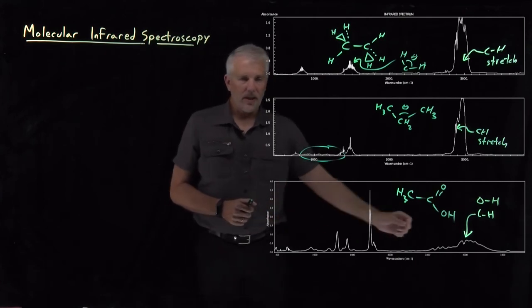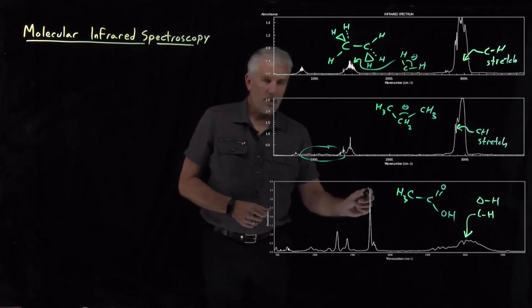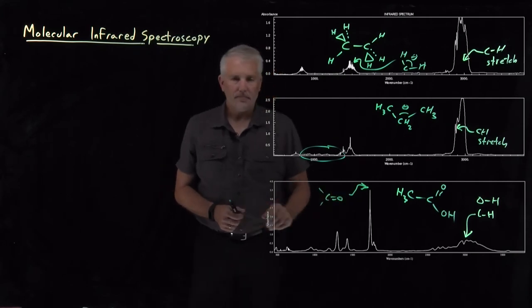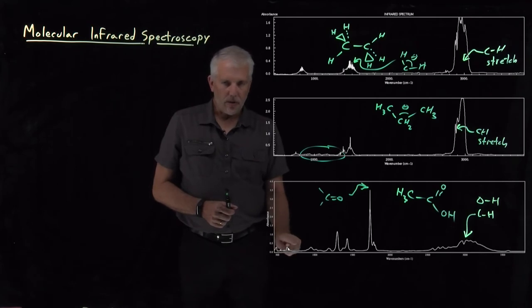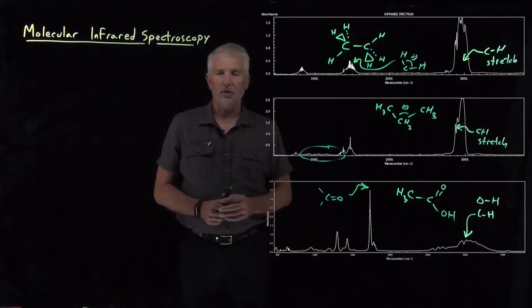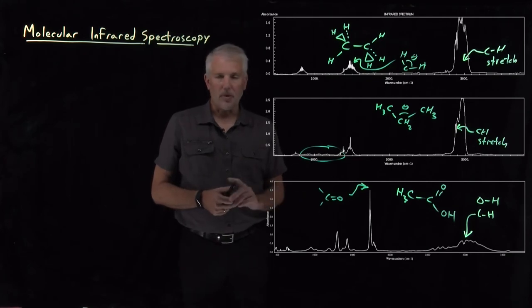That OH stretch is a much broader absorption band than the CH stretch. This sharp peak right here is the carbonyl stretch. There are various bending modes and so on. If we're interested, we can go through and identify each one of these individual peaks as corresponding to some particular vibrational mode, whether it's a bond stretch or a collective motion of several different atoms or a bending mode or something like that.